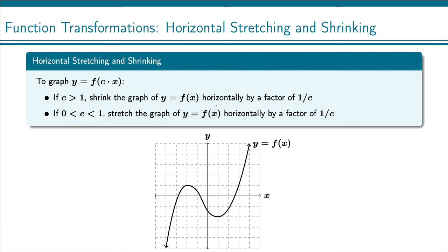And the shrink is by a factor of 1 over that constant. So think if that number, say, is 2, f of 2x, then we get a horizontal shrink by a factor of 1 over 2, so 1 half.